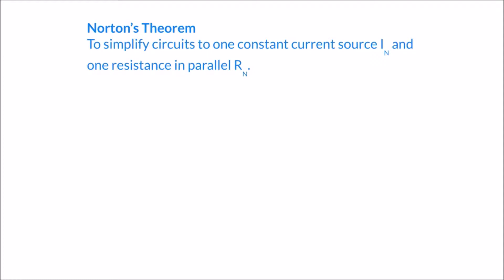In this video we're going to look at Norton's theorem. In previous videos we've looked at a circuit theorem called Thevenin's theorem, which was a circuit simplification theorem about simplifying circuits down to just two components: a voltage source and one resistor. Norton's theorem is very similar, but whereas Thevenin's theorem dealt with voltages, Norton's theorem deals with currents. The definition: to simplify circuits to one constant current source, which we call I_N, the Norton current, and one resistance in parallel, which we call R_N, the Norton resistor.